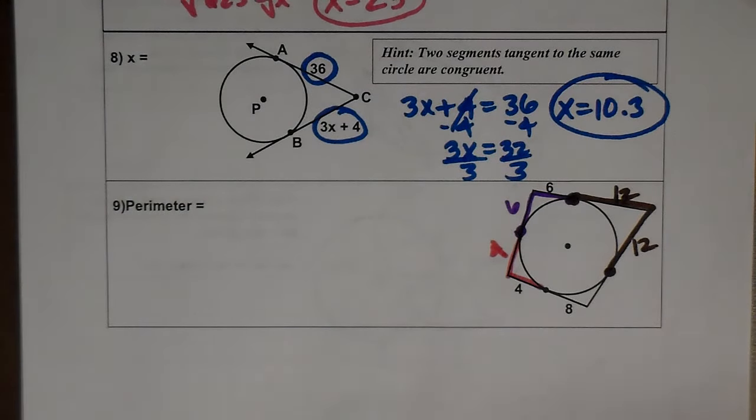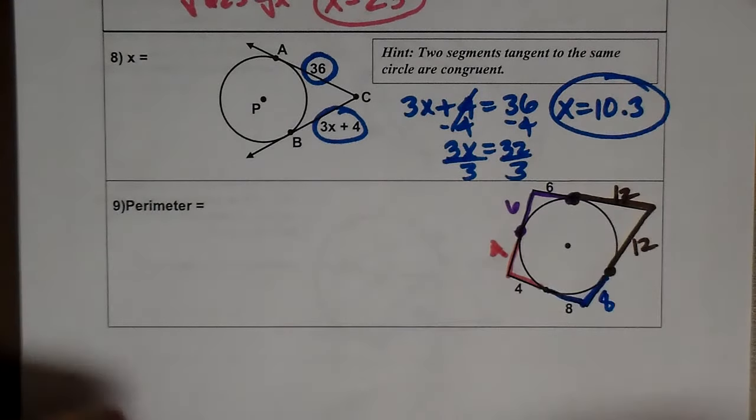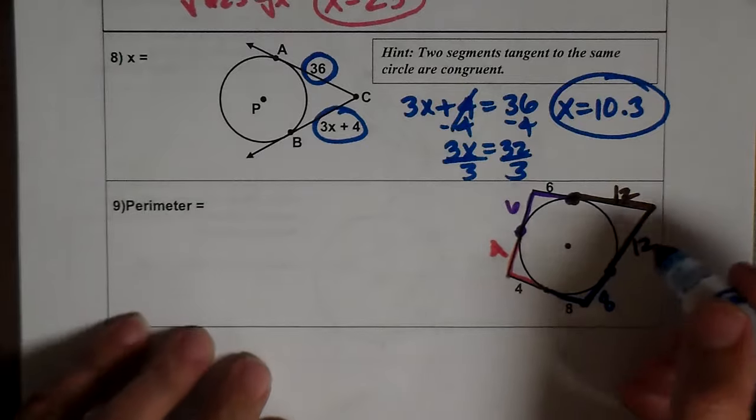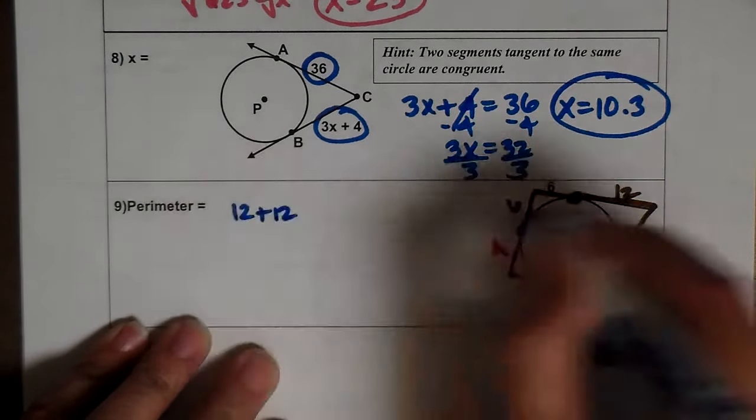And then my last pair of tangents. This is the same as this, so if that's 8, that's 8. So to find my perimeter, which is just the distance around the outside of the figure,